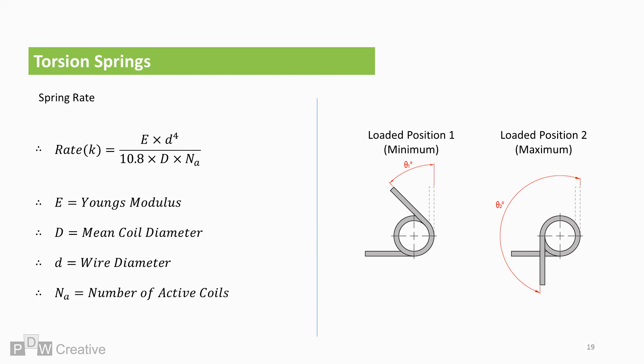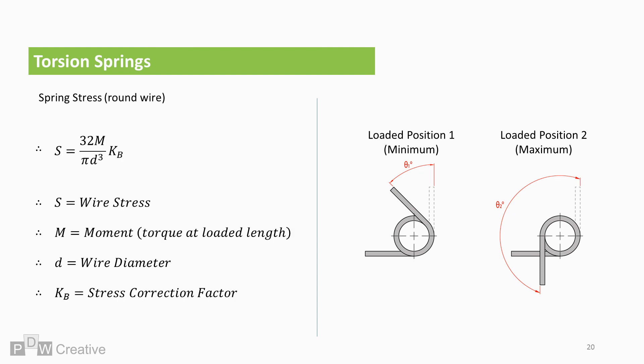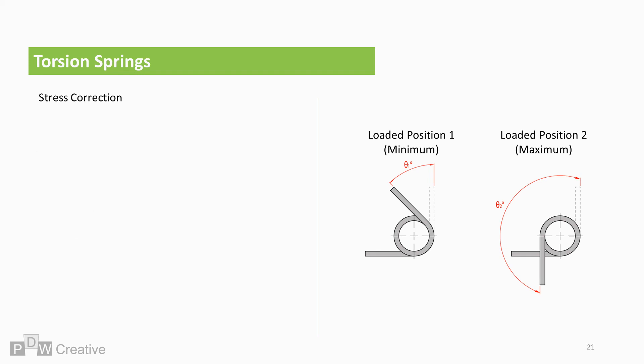Stress for round wire springs is 32 times the moment, the moment being the torque at either loaded length over pi times wire diameter to the power of 3 times a stress correction factor. Stress correction is needed as stress shifts within the wire towards the inner coil diameter under load. This leads to a higher stress at the inner diameter.